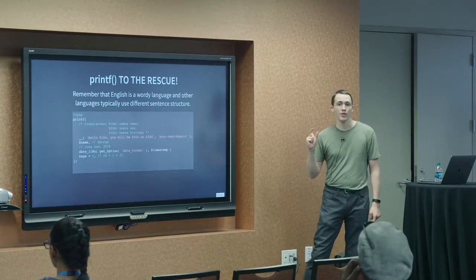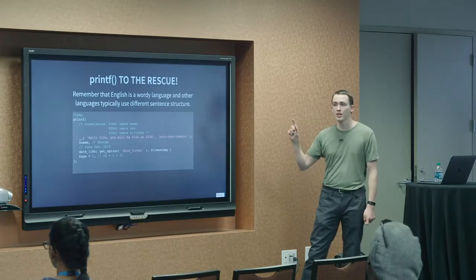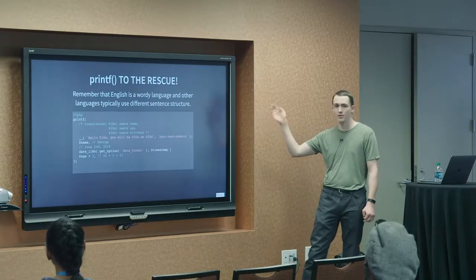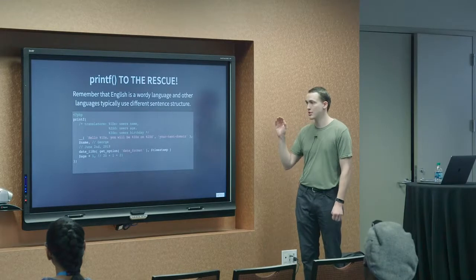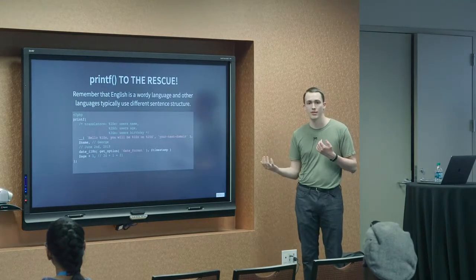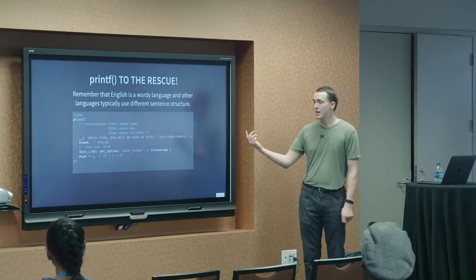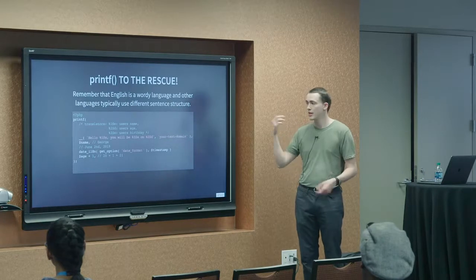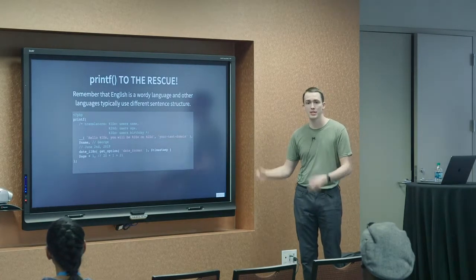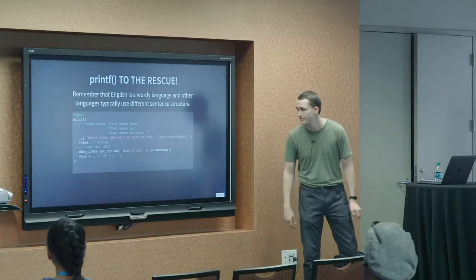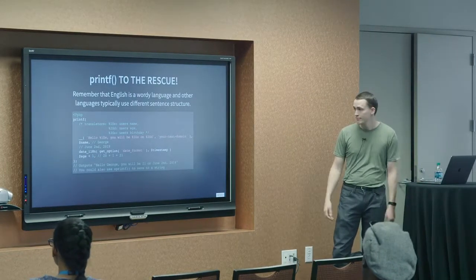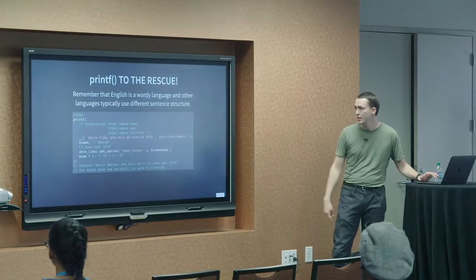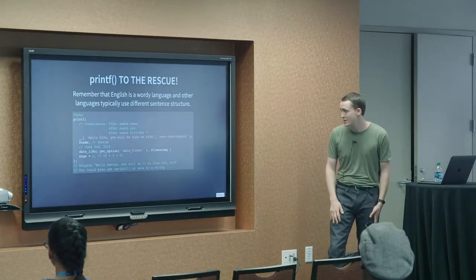One thing I would recommend is especially if you have more than one dynamic value that needs to be replaced in a single string, that you use the %1, %2, %3 format instead of just using %s or %d for a string or a digit. Because that way, if when it's translated, they need to flip which order they're in, the translators can do that and it will still make sense in the end and all the values go to the correct place. And, oh yeah. So, in this example, it would output, hello George, you'll be 21 on June 2, 2019.